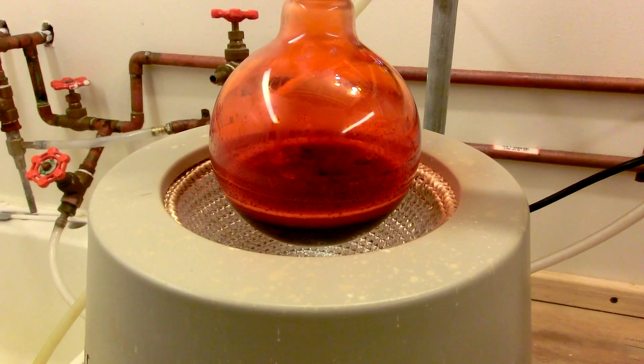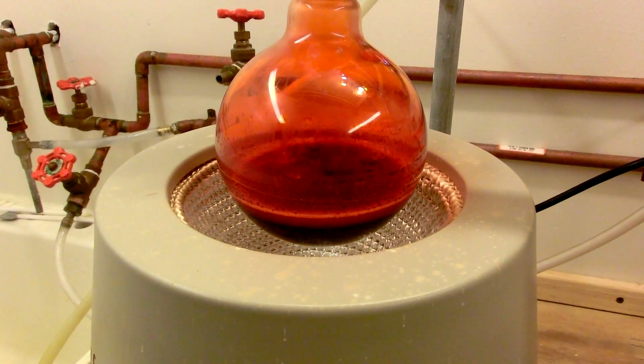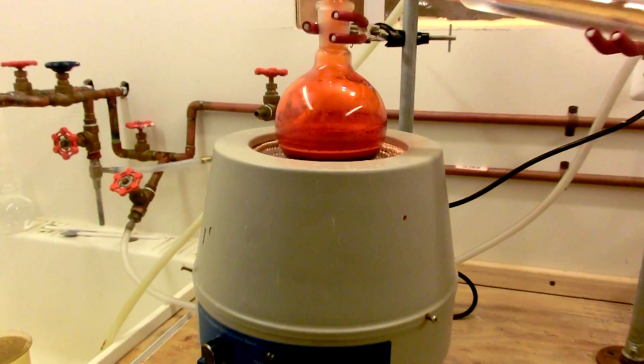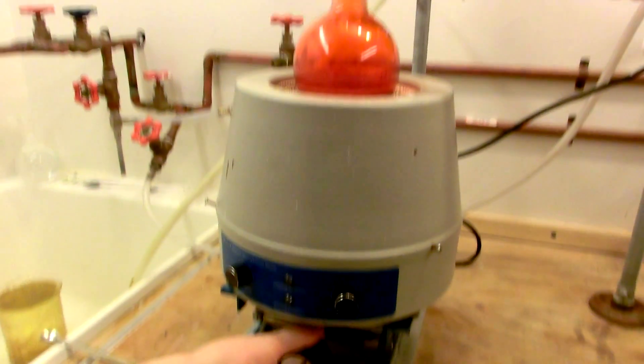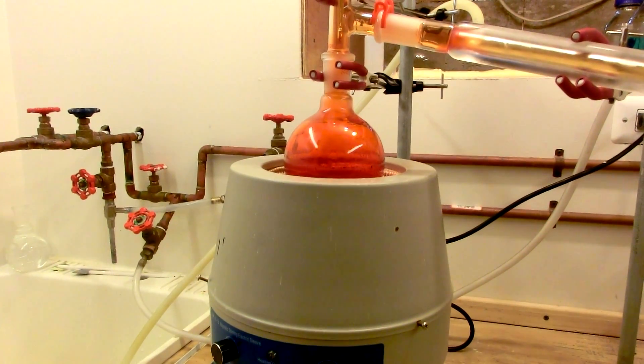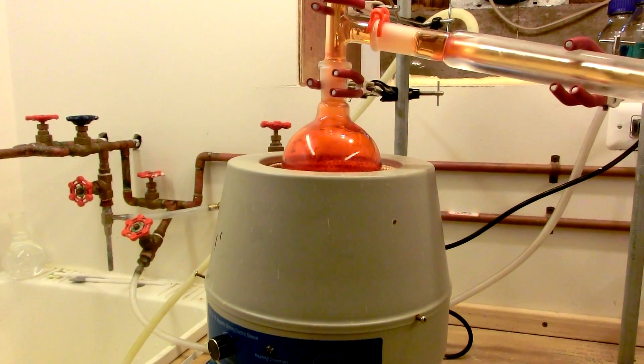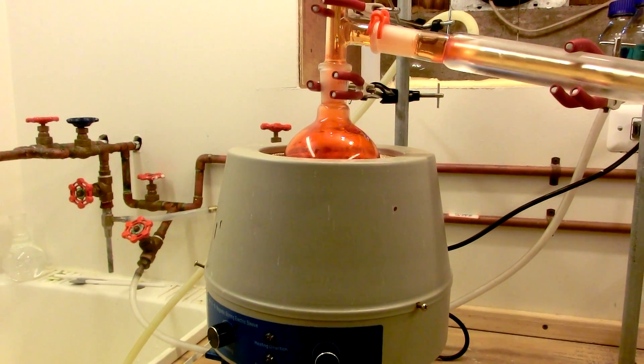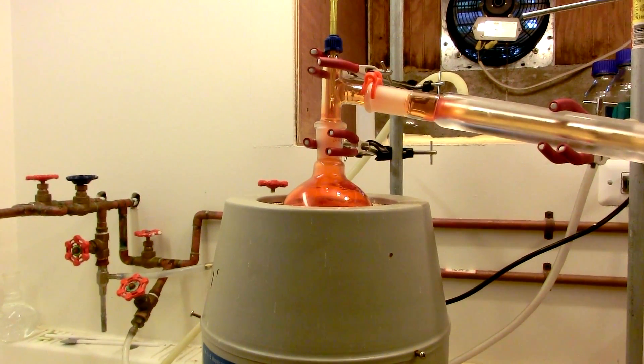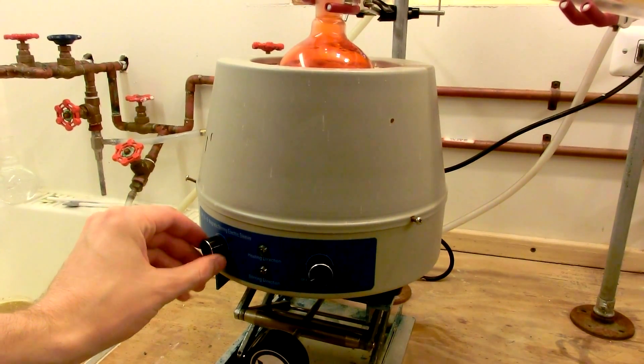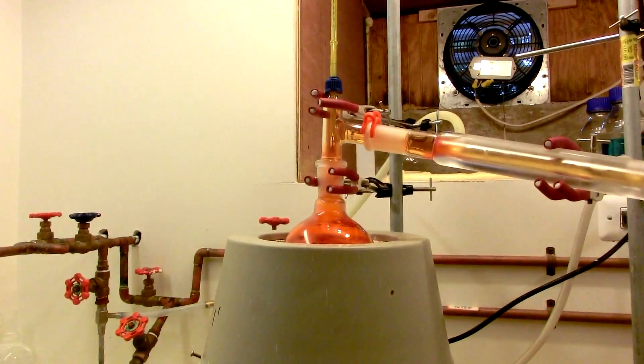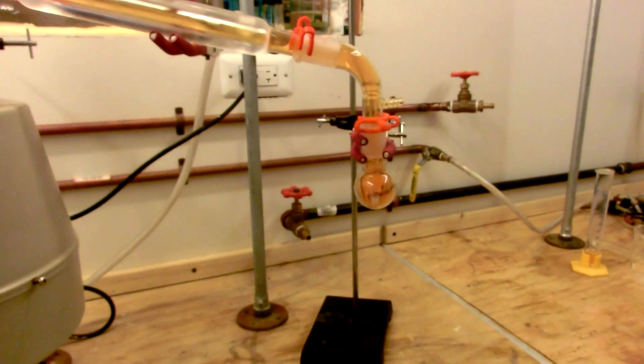The reactants have now been sitting in the vessel for approximately 10 minutes, so it's about time to distill. We'll simply raise the heating mantle. There we go. And turn on the heat. And in a few minutes, we'll begin to distill chromal chloride into this flask over here.